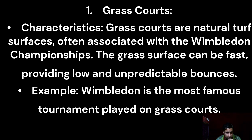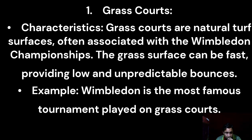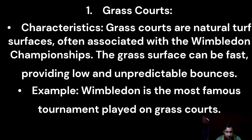In lawn tennis, there are different playing surfaces, and different types of courts have distinct characteristics that can affect the style of play. The first type is the grass court. Grass courts are natural turf surfaces, often associated with the Wimbledon championship. The grass surface can be fast, providing low and unpredictable bounces. Wimbledon is the most famous tournament played on grass courts.